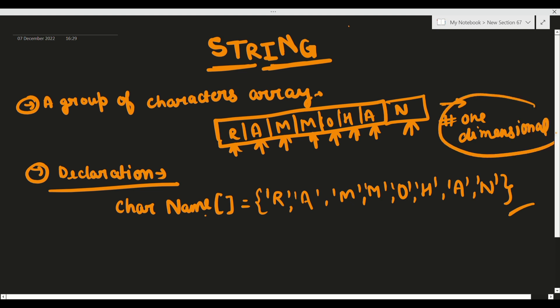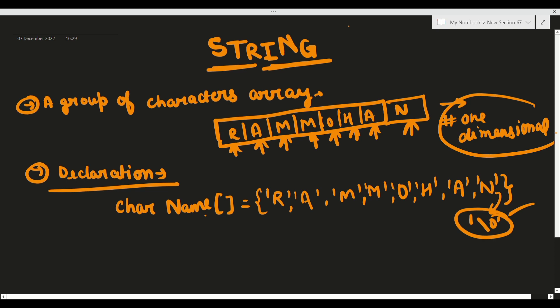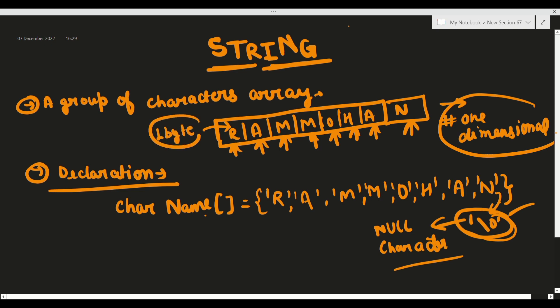Next चीज़ - इसके साथ में एक चीज़ और यहाँ पे store होती है - वो होता है backslash 0. यह backslash 0 बताता है कि यहाँ string आपकी खत्म हो गई है, इसके बाद string में कोई element नहीं बचा। इसको बोलते हैं null character. एक character आपका 1 byte memory लेता है। Last character जो है - वो यह backslash 0 यानी null character होता है।